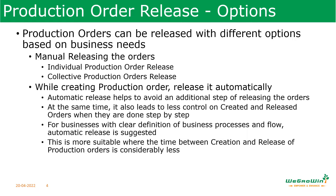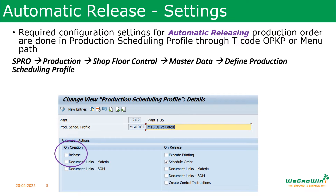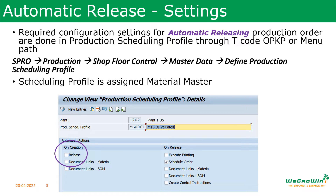Depending on what the organization needs and the maturity of the business process levels, this can be triggered. To set this automatic creation during creation of production orders, this is done in configuration at the production scheduling profile. The transaction code used is OPKP, or the menu path is given here. In the automatic sections on creation, you can see the release checkbox. If we select this checkbox, when the order is created, the order will be automatically released. In our system, I kept it without checking this box, so I will be releasing orders when needed.